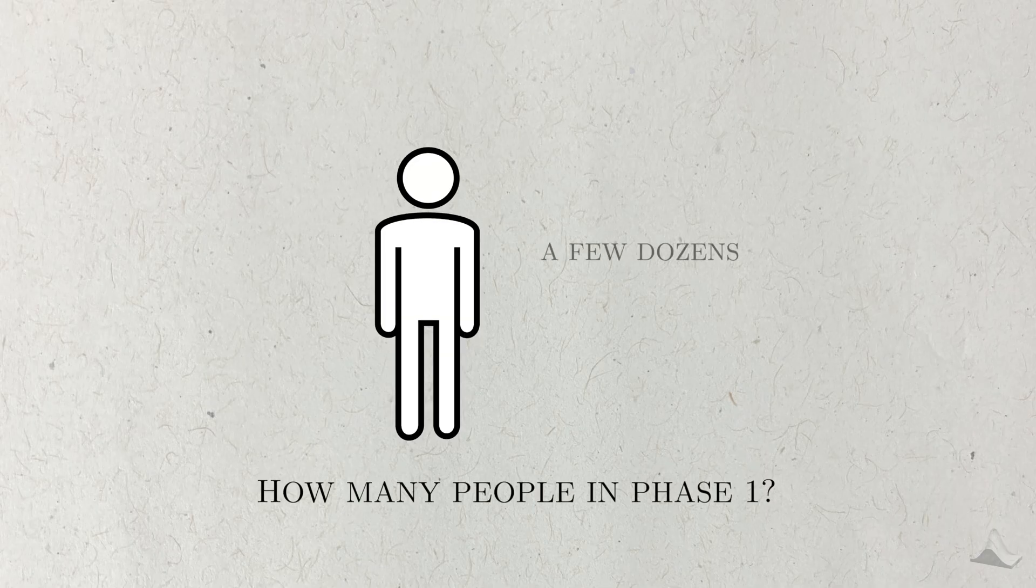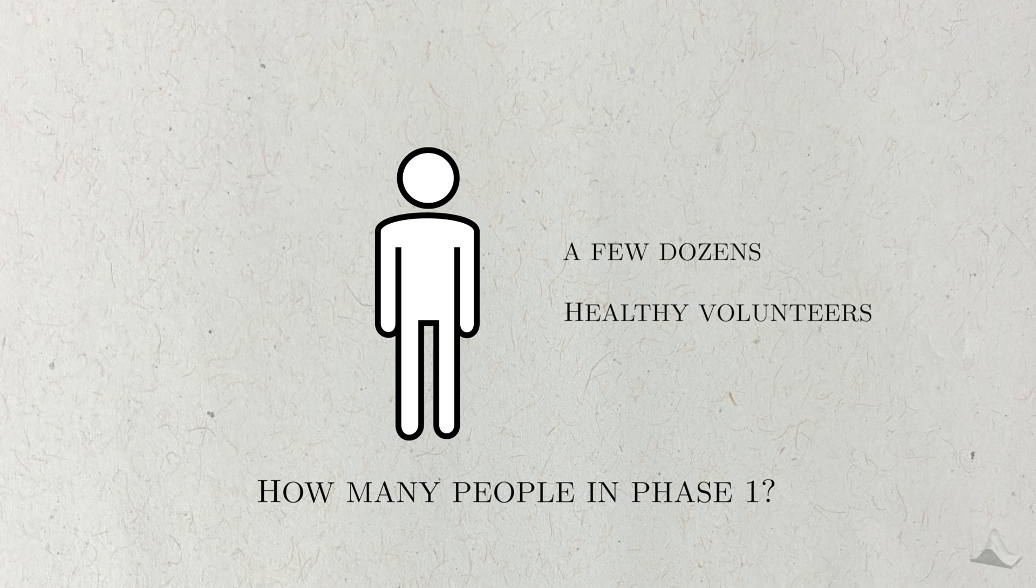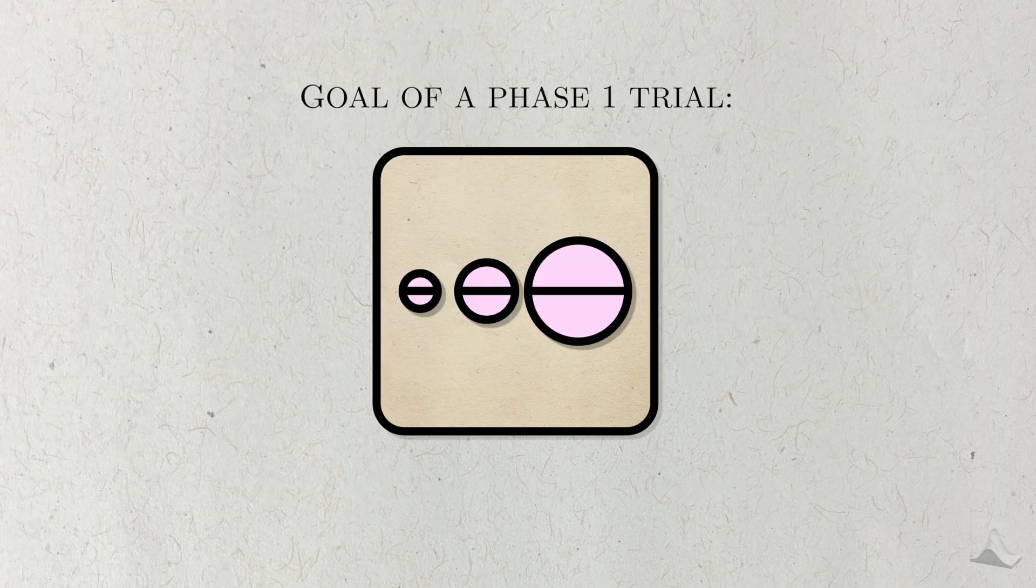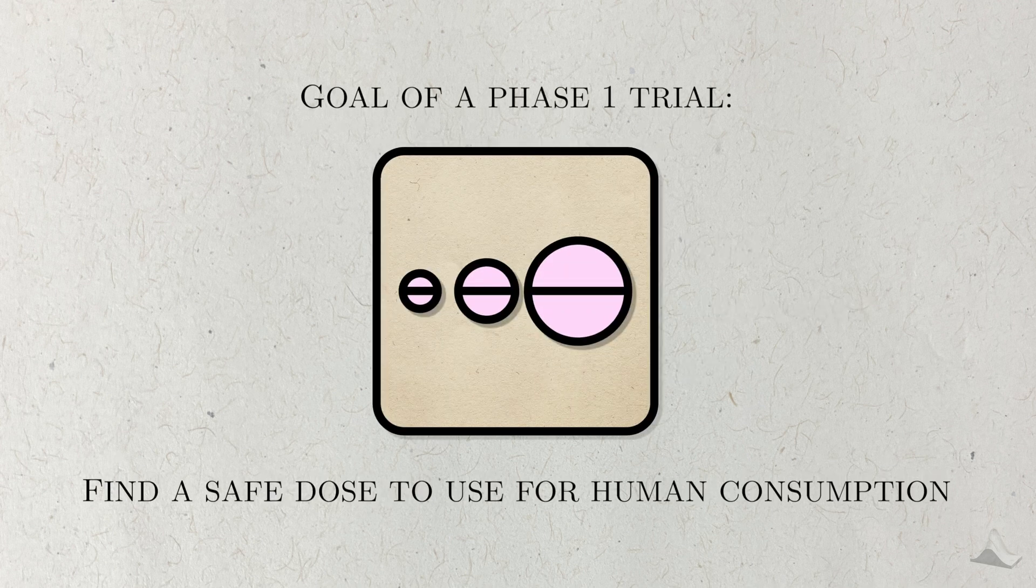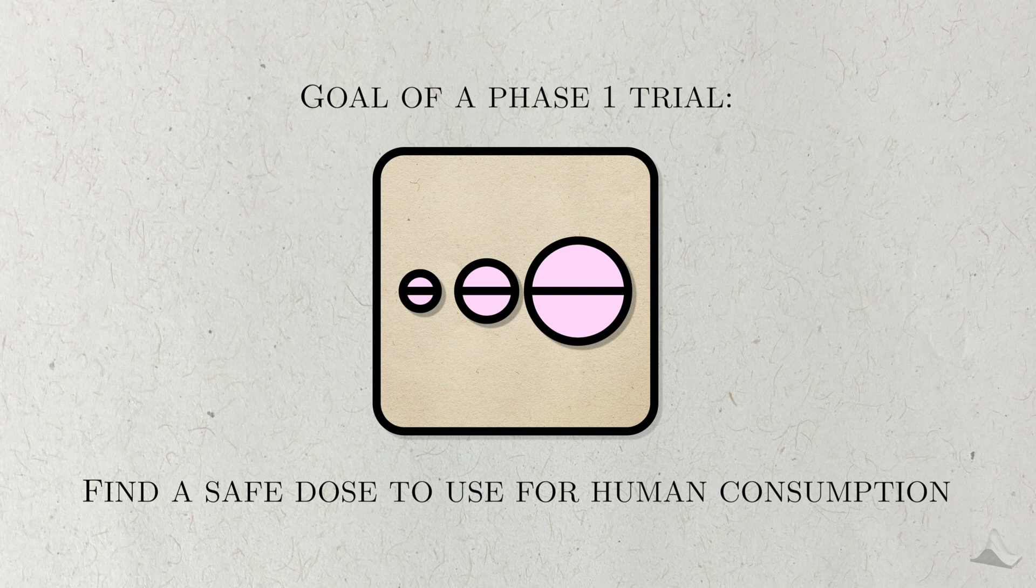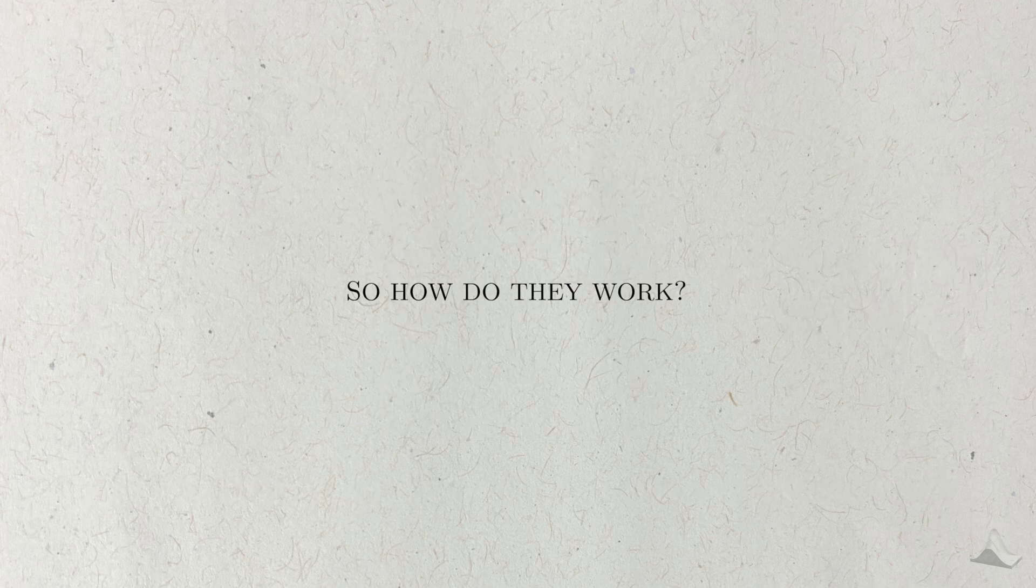Phase one trials are pretty small. They only recruit a few dozen people, and they're usually healthy or paid volunteers. But they could also be people who are extremely ill, and all other standard options have failed them. The point of a phase one trial isn't to figure out if WeNormal is effective or not. It's to figure out a safe dose for human consumption. The trials we use to figure this out are named dose-finding studies.